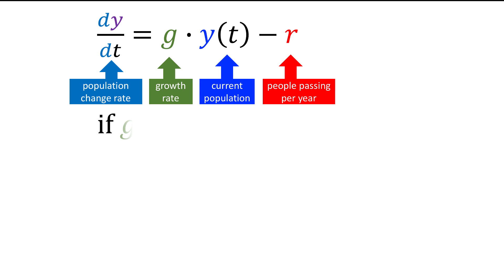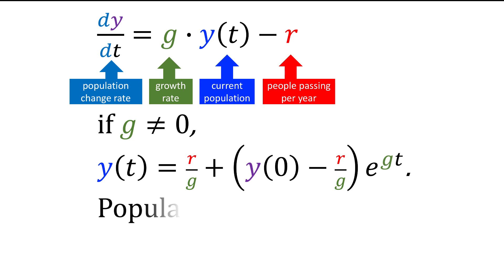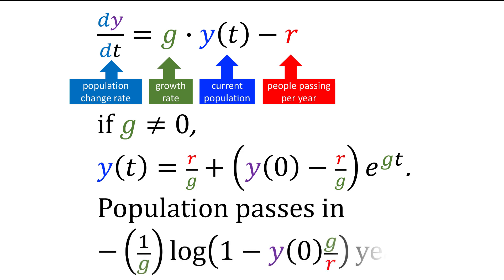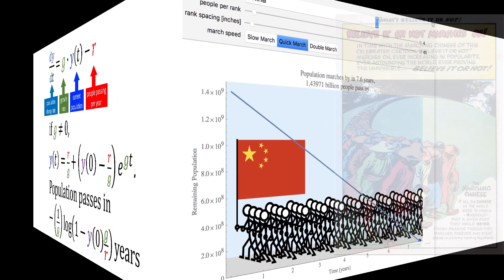the remaining population is given by the relatively simple exponential function, where the population at time t is simply r divided by g plus initial population minus r divided by g, that quantity times an exponential raised to g times t. That means that the population passes by in negative 1 over g multiplied by the log of 1 minus initial population times g over r years.